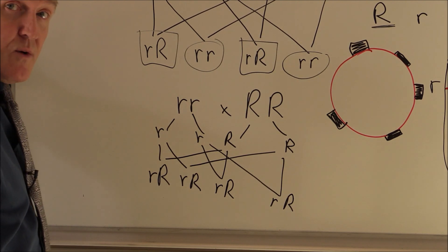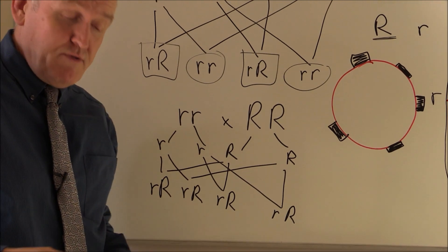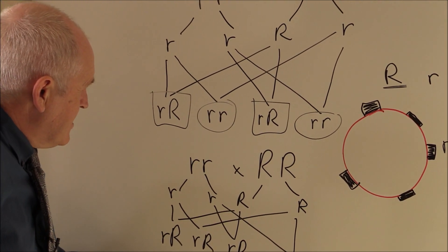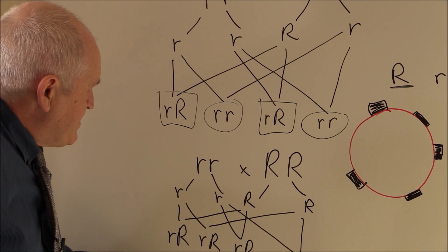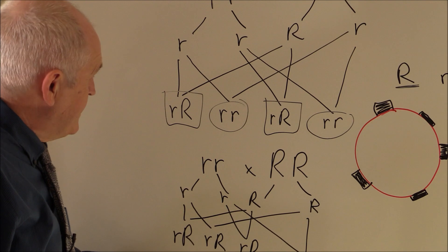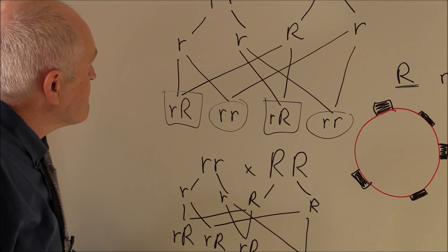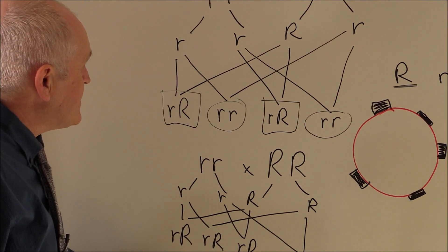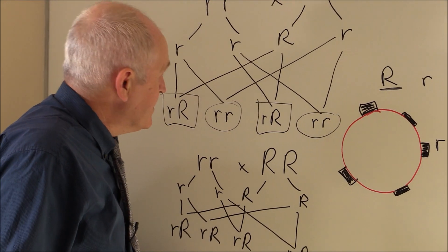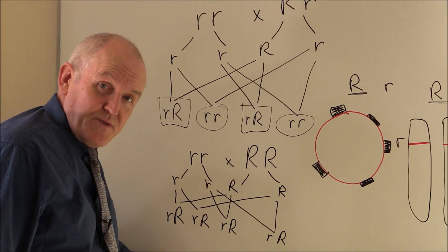So the Rhesus factor, really quite simple. It's either there or it's not. It's coded for by a single dominant gene, which may be present in homozygous or heterozygous form in the father. So consider Rhesus factor incompatibility whenever we have a Rhesus negative mother and a Rhesus positive father.